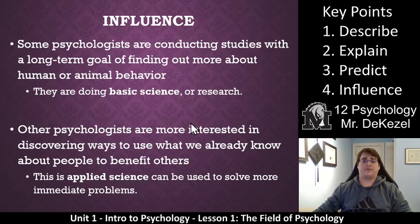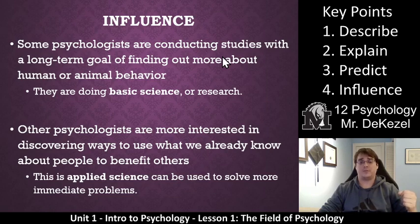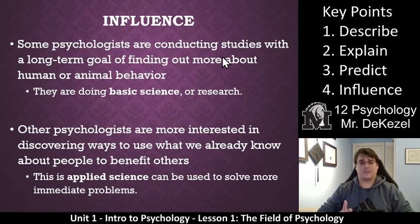The fourth key point and fourth goal is to influence. Some psychologists conduct studies with a long-term goal of finding out more about human or animal behavior — this is basic research. Other psychologists are more interested in discovering ways to use what we know to benefit other people — this is called applied science. Basic science is research just for research's sake, and applied science is using it to influence behavior and solve problems for people. Some psychologists find it unethical to be influencing behaviors, believing it should only be about finding out what people do and explaining why, not trying to change what they do.